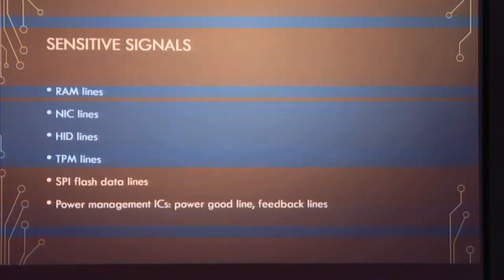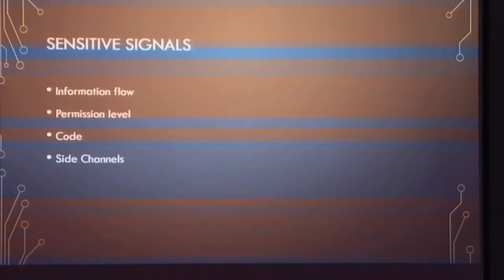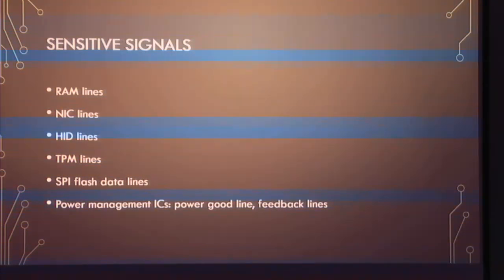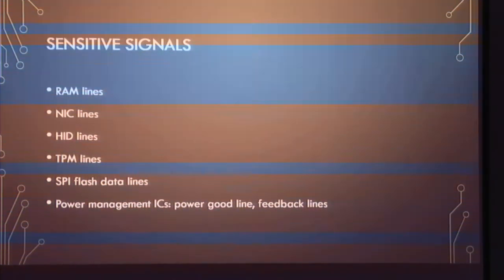RAM lines are clearly a sensitive signal — they fall into multiple categories: information flow, code, sometimes permission levels, and side channels. Network interface card lines similarly contain data and sometimes code. Human interface device lines — your keyboard and mouse — can be quite valuable; when van Eck freaking was a thing, that was definitely the target. Lines that go toward your TPM are also sensitive: a Trusted Platform Module acts like an onboard smart card, holds keys, and allows cryptographic operations and limited system state measurement.